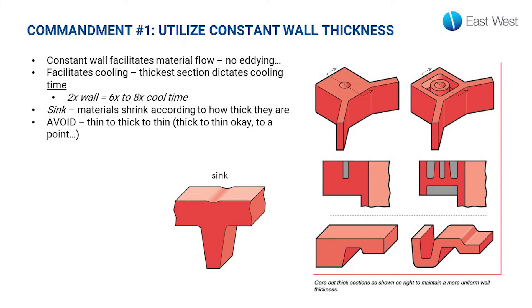The first commandment for injection molding is to utilize constant wall thickness. Injection molded parts will shrink according to how thick the part is in a certain area. A part that has been designed well has a consistent wall, so it will shrink in a consistent, very predictable manner. Whereas a part with different thicknesses throughout is going to shrink in different amounts and will cause unsightly sink and cosmetic errors. This also eliminates flow anomalies, things like eddying currents which create other cosmetic defects in the part.